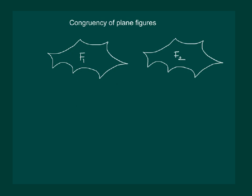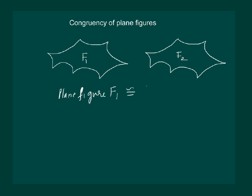Alternatively, we may cut one of them and place it over the other one. If the figures cover each other completely, they are congruent. And we can write that the plane figure F1 is congruent to plane figure F2.